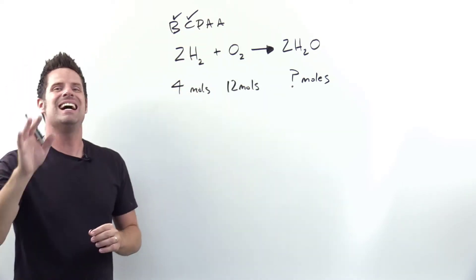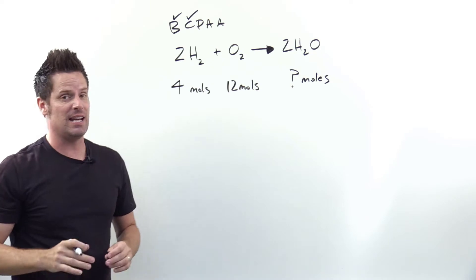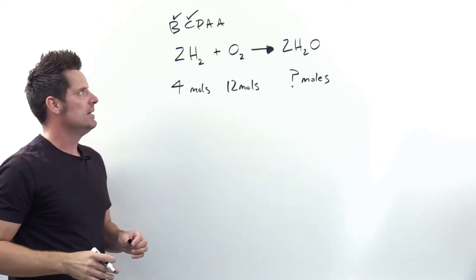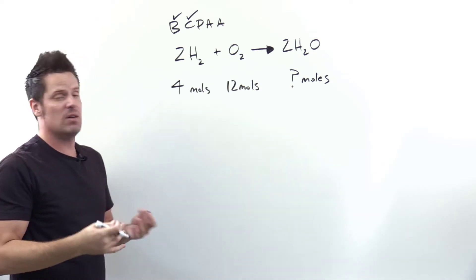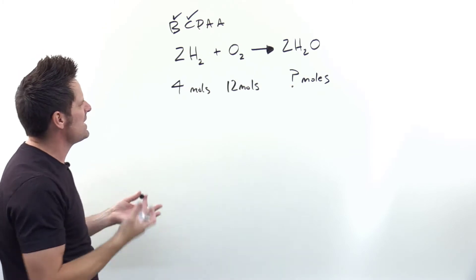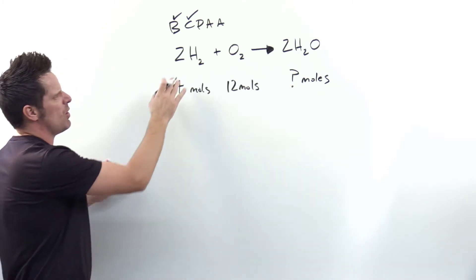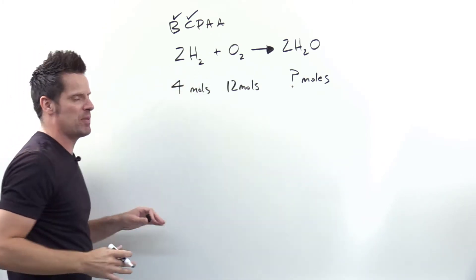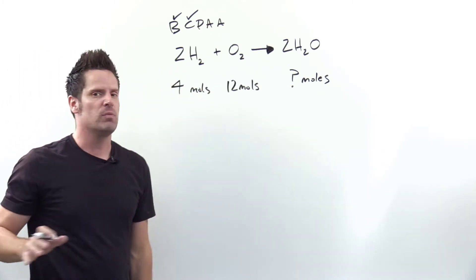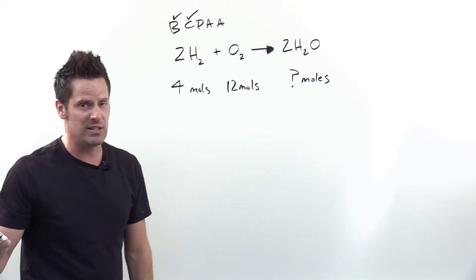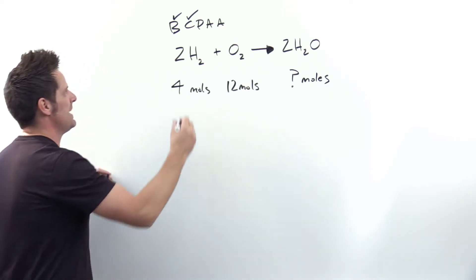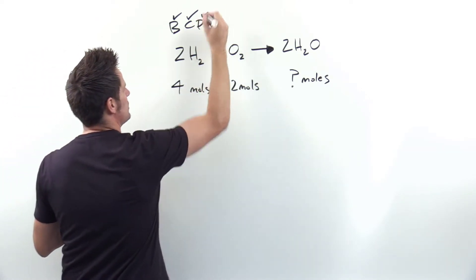Letter P stands for pick a reactant, and it doesn't matter which one you pick. For the sake of this example, let's go ahead and pick H2. The principles I'm going to apply hereafter you could totally do the same if you'd picked O2.